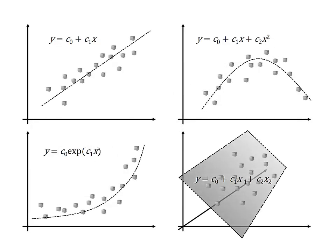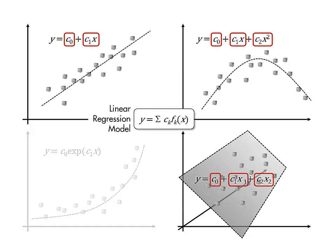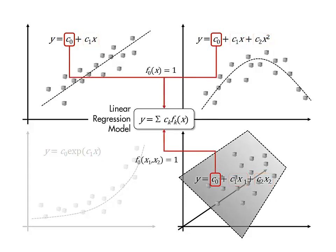There are infinitely many possible parametric regression models you could propose. An important class of models is linear regression models, which includes any model that is a sum of terms where each term is a function of the predictor variables multiplied by one of the parameters.